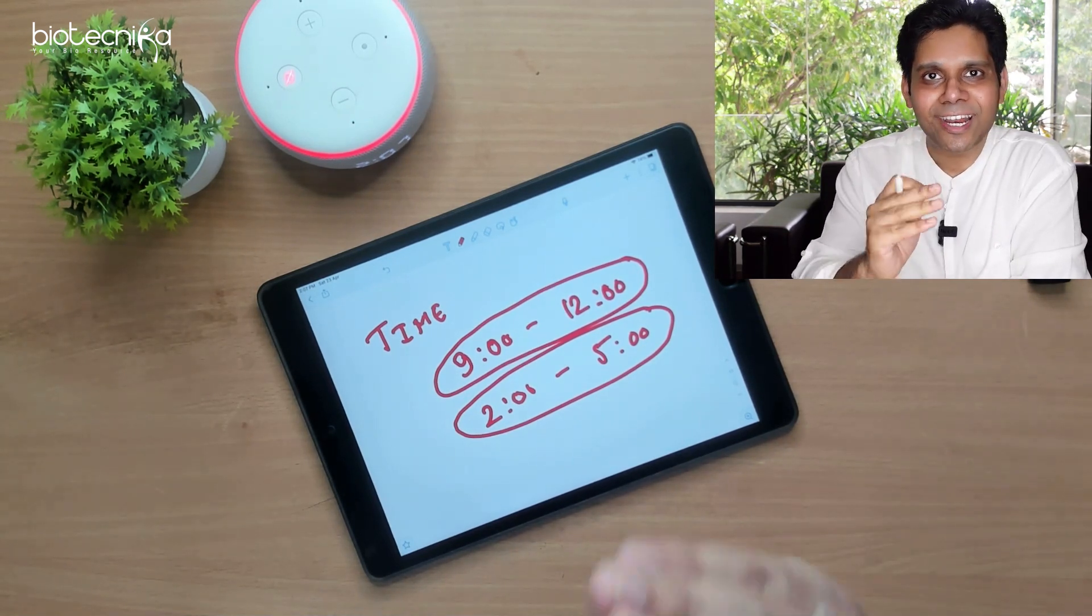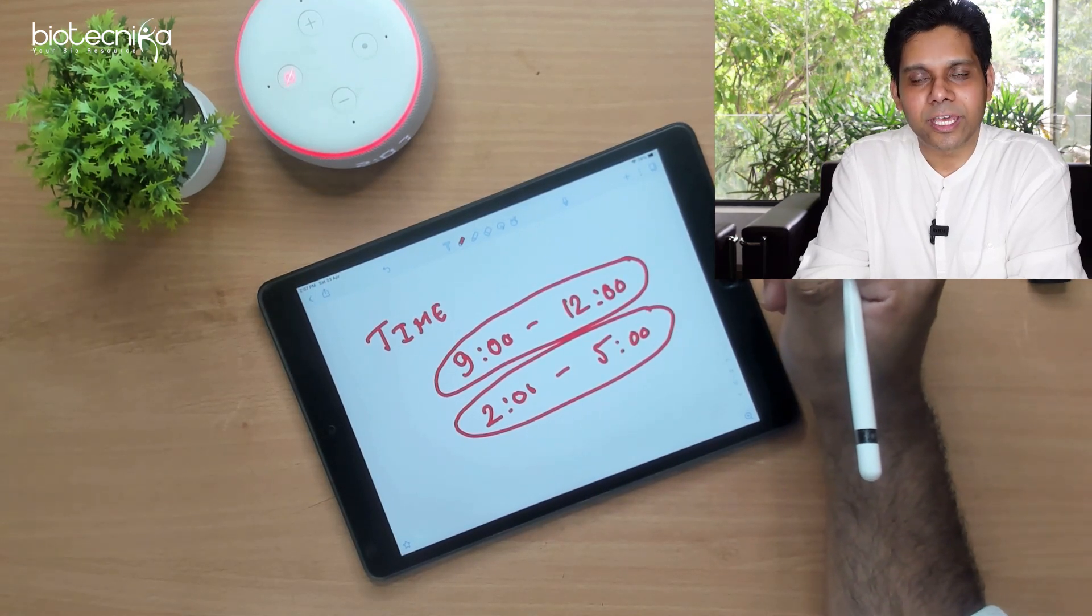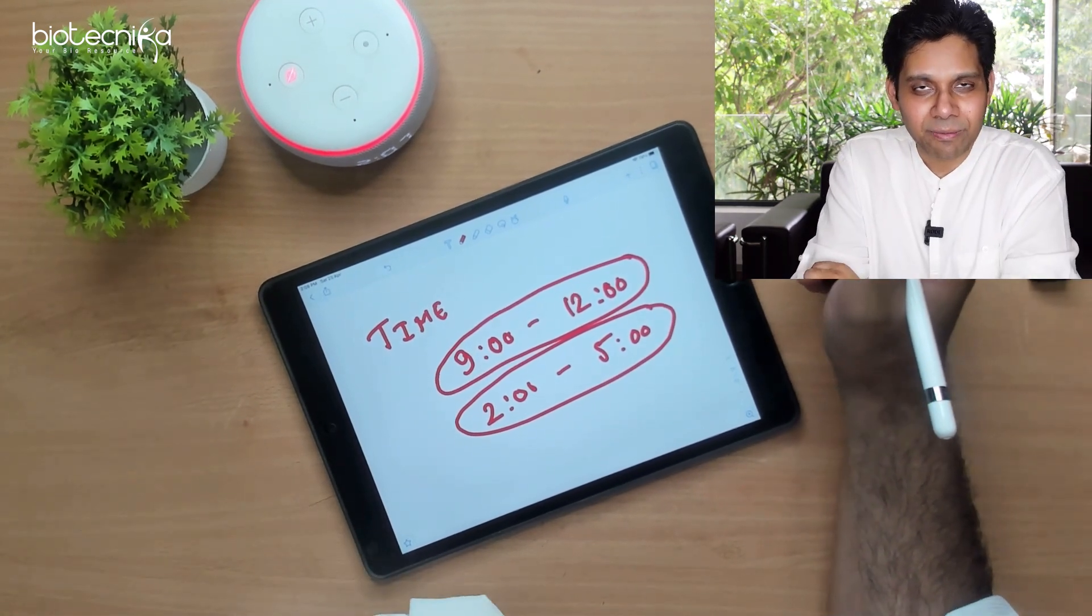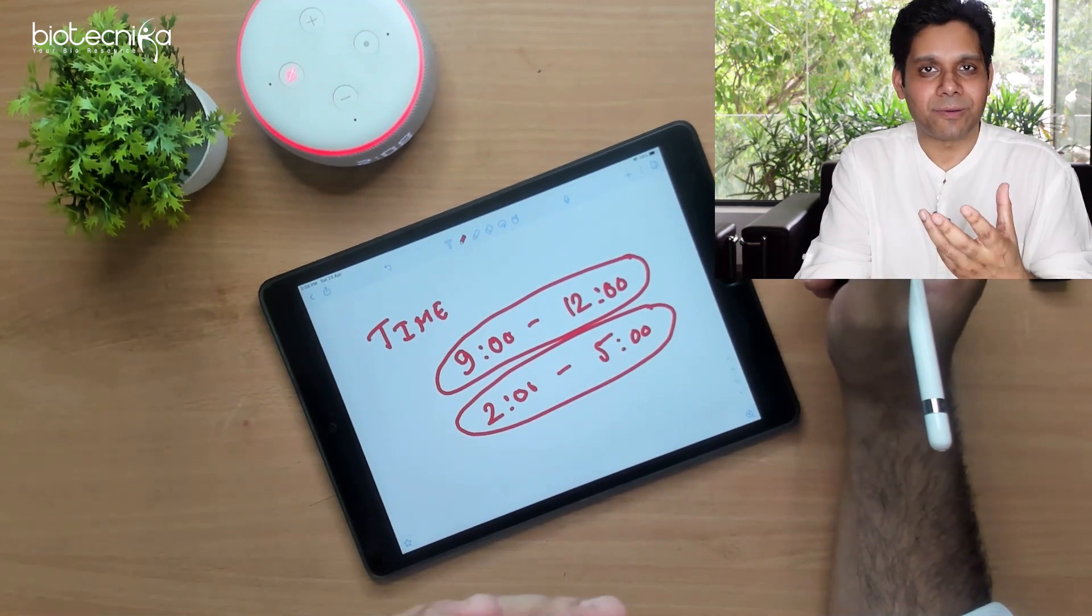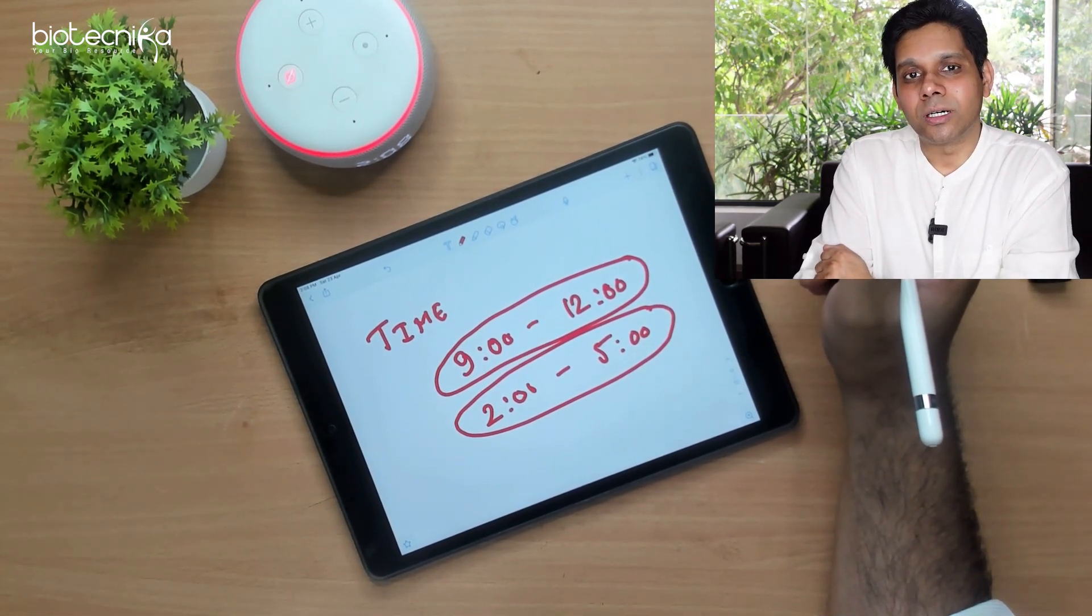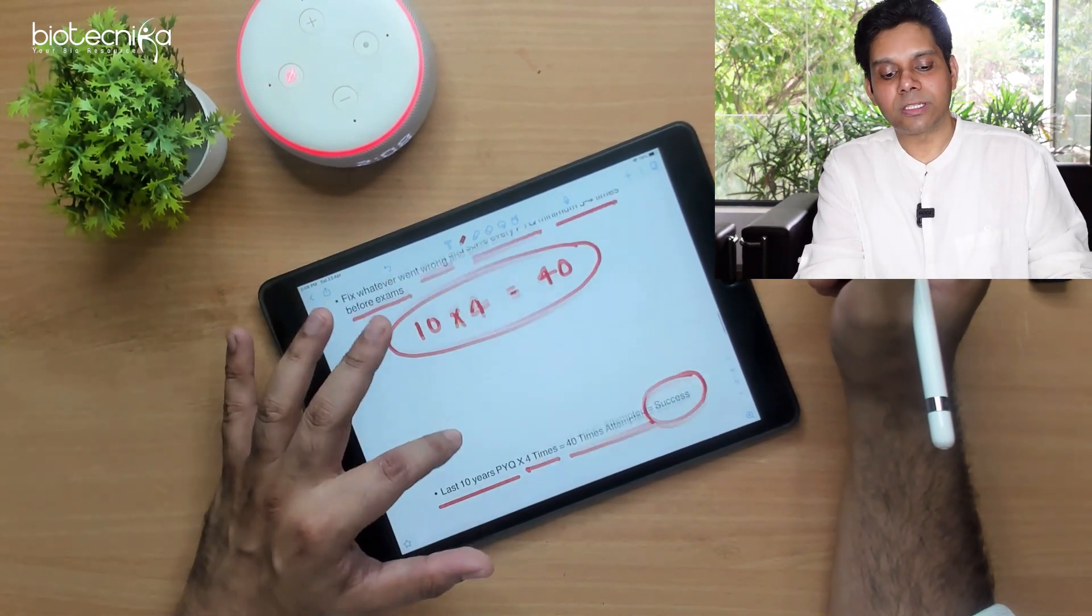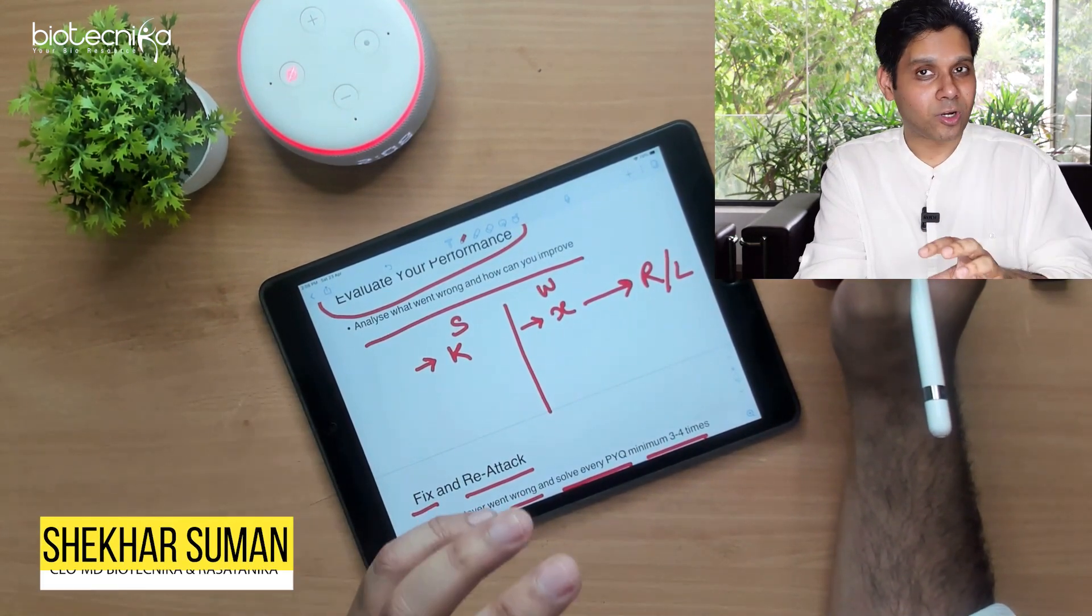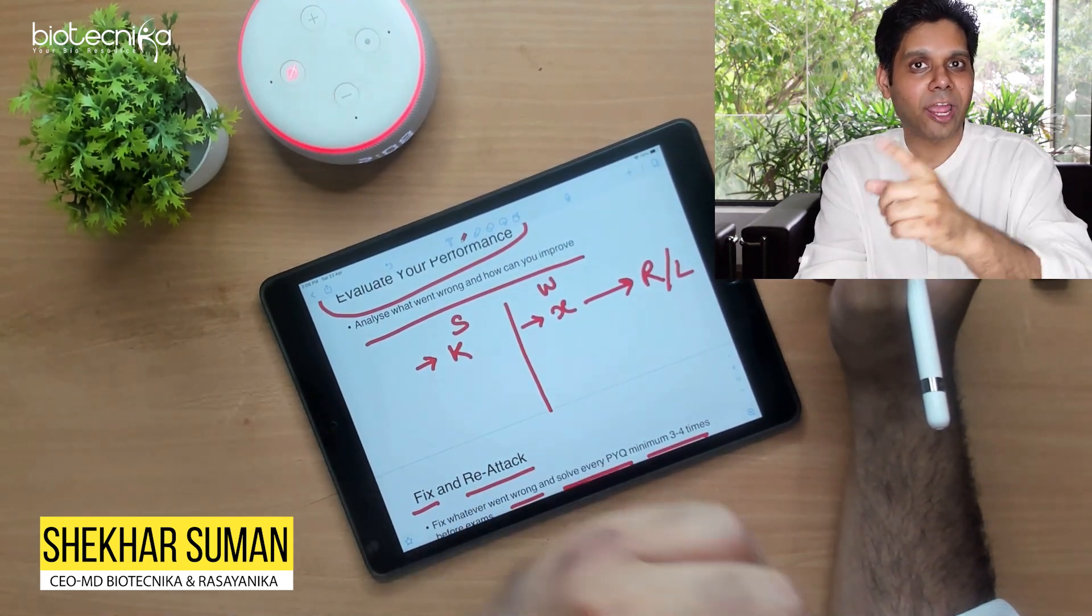Ideally what you have to do is you should solve the question paper in these two slots. If you solve in these two slots, what will happen is your mind will get programmed, your body will get programmed, you will not feel sleepy, you will not feel tired, you will be always active in those slots. When you actually write the real exam, you will never feel tired, your body will be fully active and you will be focused. Remember, what you do with your PYQs has a great impact on your final assault in the exam.